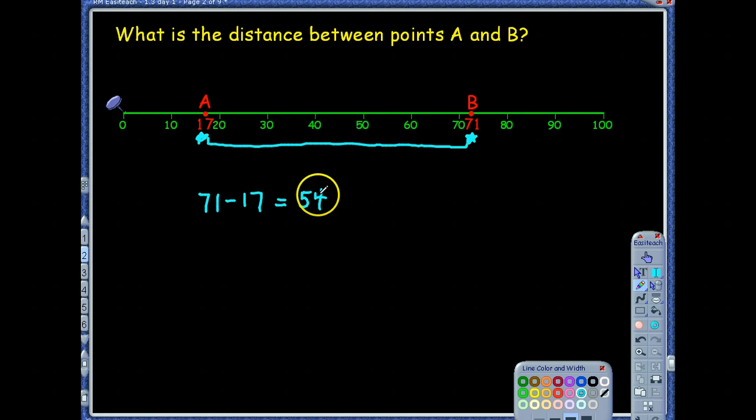All right, so when we're talking about the distance between two points, we know that it's the difference between their two values. Now, what if I had said 17 minus 71? Well, if I do 17 minus 71, that gives you a difference that's negative. Right. So just to be more specific, you could say,